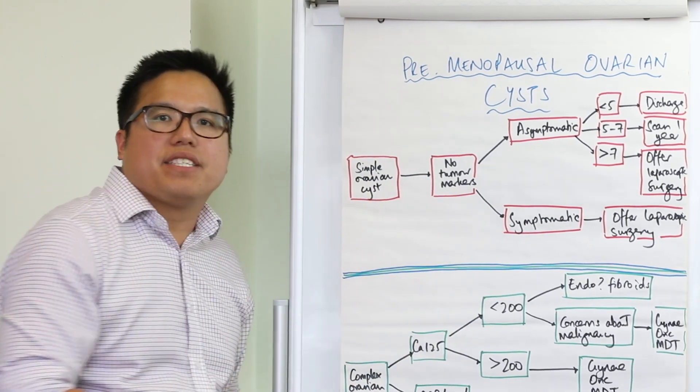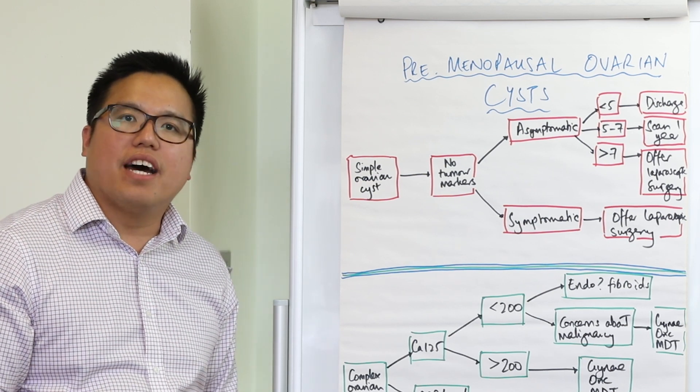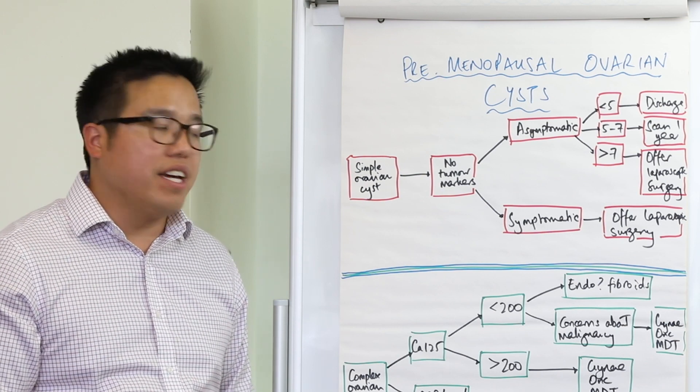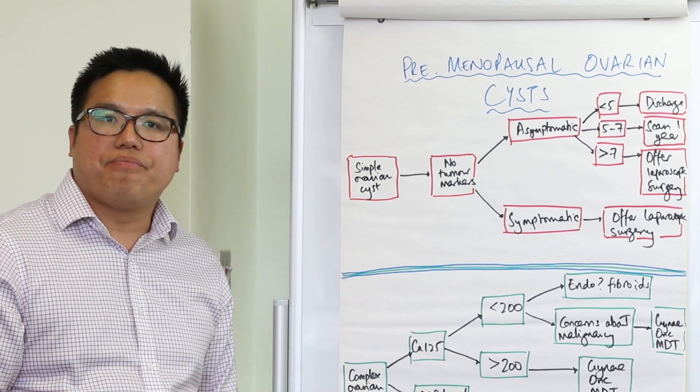For those that are symptomatic, that's relatively easy. All you need to do is take a history, examine the patient, and assess whether the woman needs to undergo laparoscopic surgery, and it doesn't matter whatever the size of that cyst on the scan.